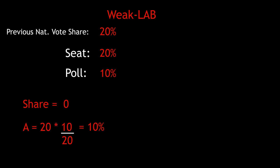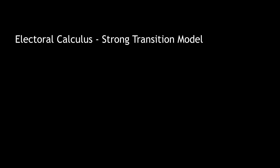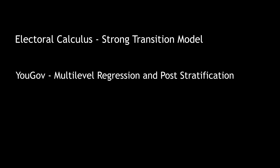That's the strong transition model in a nutshell. At the time of making this video, Electoral Calculus predicts a Conservative majority by only 74%. The STM isn't the only modern electoral prediction model out there — YouGov have been using a multi-level regression and post-stratification model, which is arguably quite a bit more sophisticated than the STM. YouGov's current prediction is a hung Parliament, with the Conservatives falling short by 18 seats — quite different from Electoral Calculus's prediction.